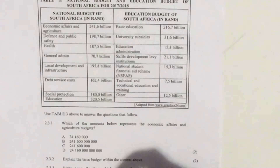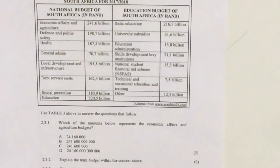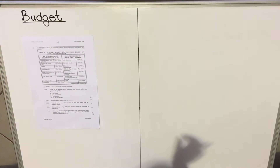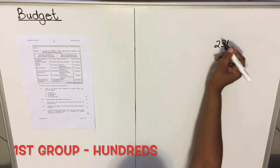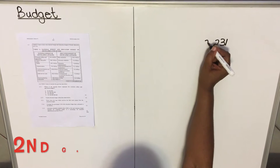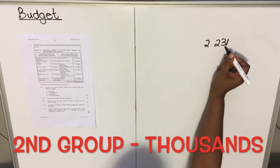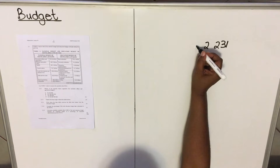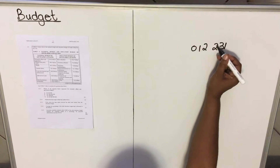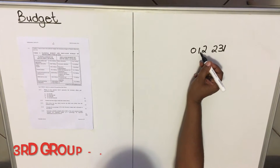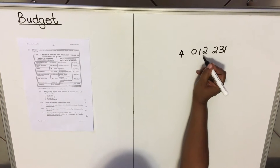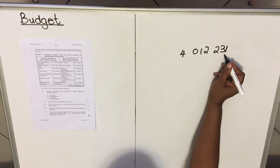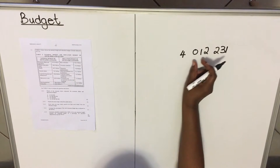This question wants to see if you understand how to write numbers — how to write a billion, how to write a million. Numbers are divided into groups of three. So 231 is the first three-digit group. When you go to the next group it's thousands, so if I have a 2 here it's two thousand two hundred and thirty-one. These thousands have three numbers. When I go to the next one, I go to millions, so if I have a 4 here it's four million.